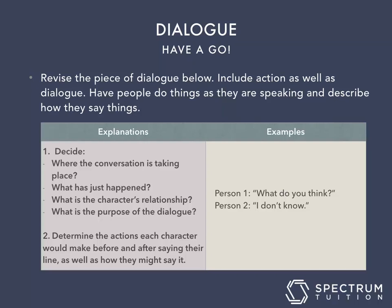What you need to do is revise a piece of dialogue to include action as well as dialogue — have people do things as they are speaking and describe how they are saying things. When revising, decide where the conversation is taking place, what has just happened, what the characters' relationship is, and what the purpose of the dialogue is. Then determine the actions each character would make before and after saying their line. Actions can be big or small — like a character just picking up a pencil or putting down a glass on a table. Pause the video now and try it out.